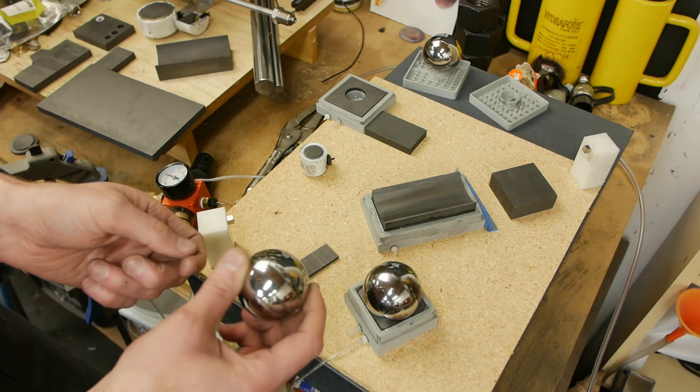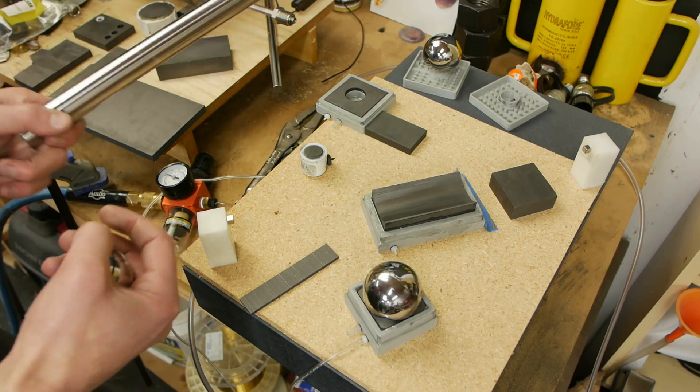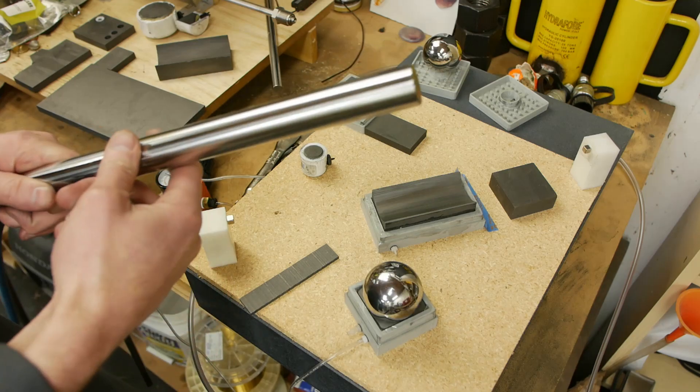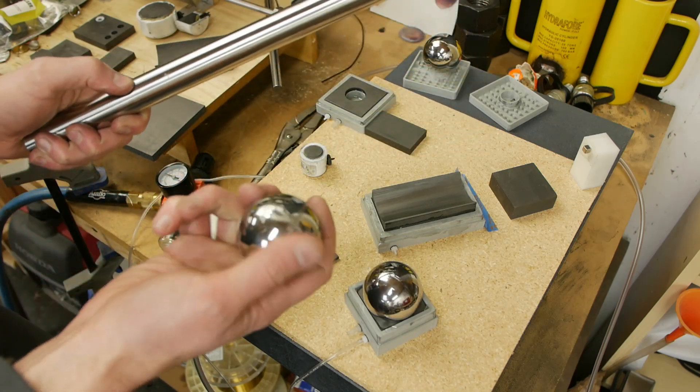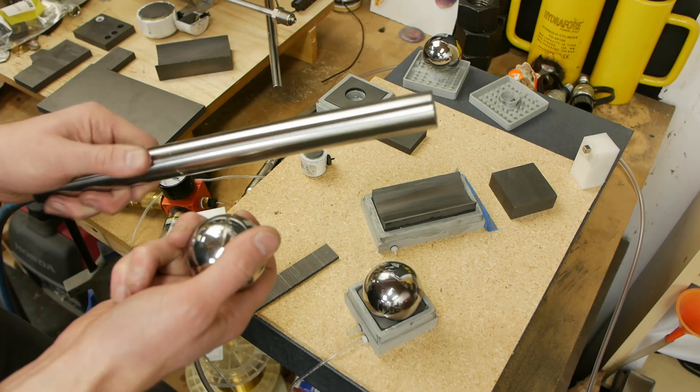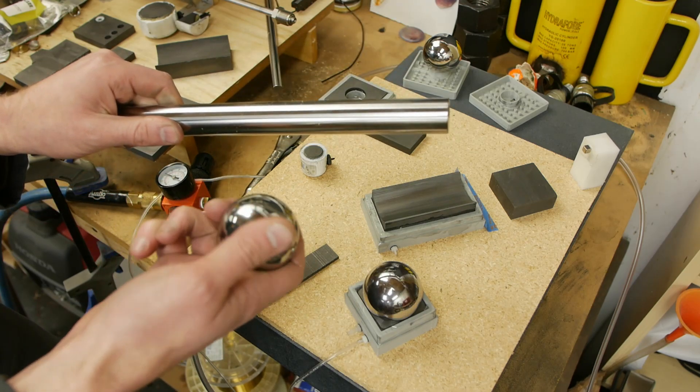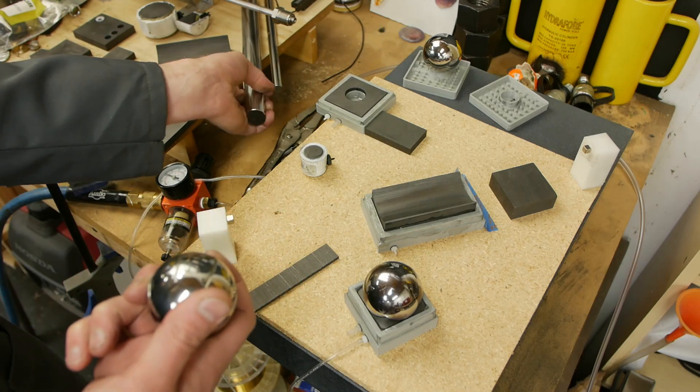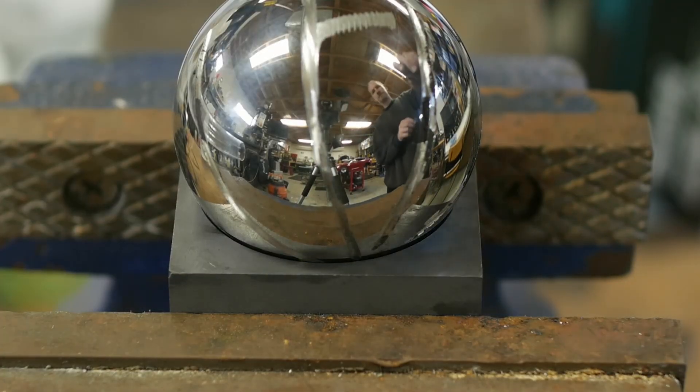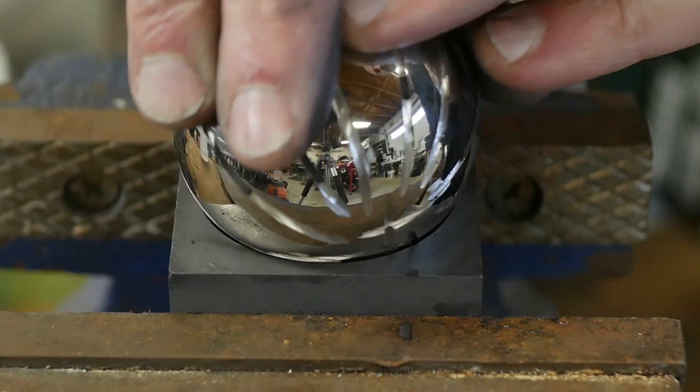Similarly for these linear rails, I'll put links to all this stuff in the description. These came from McMaster, the ball bearings came from Amazon. The grinding tolerances on these are really tight so you can be guaranteed that if you buy one of these even from a different lot it will be a very consistent diameter.